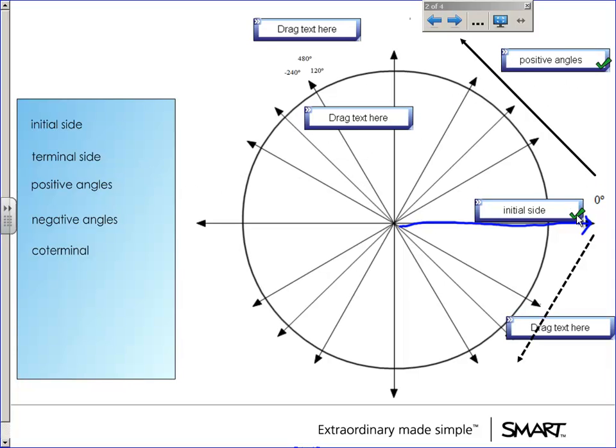So if we are rotating from this initial side counterclockwise we're making a positive angle. Let's just say that we started rotating from here and we stopped at 120 degrees. Straight up here would have been 90 degrees. Let's say we stopped over here at 120 degrees.